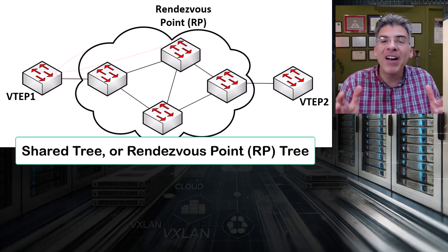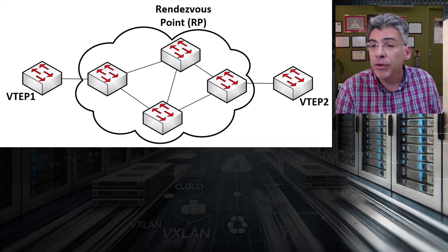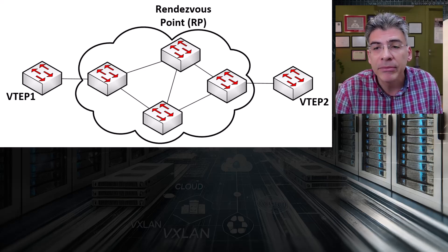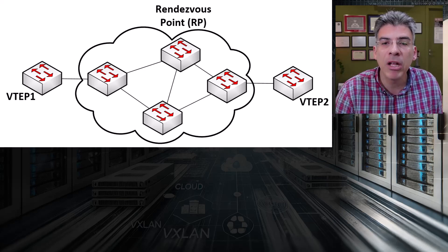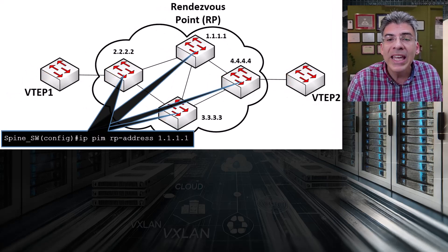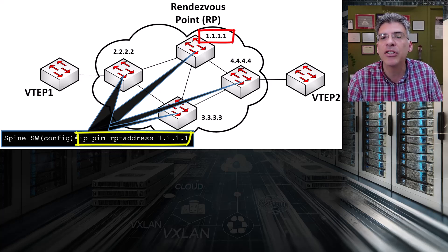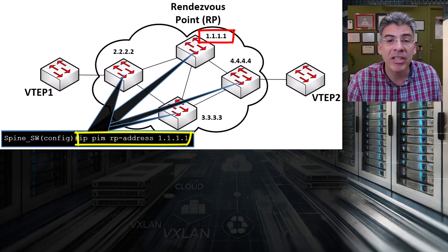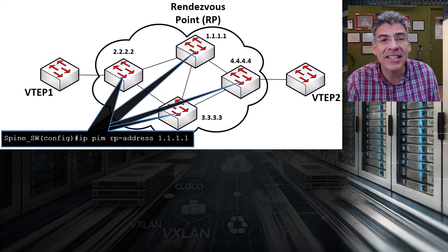An RP helps in efficiently managing multicast group memberships and multicast routing by serving as the root of what is known as a shared tree or the RP tree, to which multicast sources send their traffic and from which receivers join the multicast group. The RP is a vital part of the operation of PIM sparse mode multicast. So the first weakness in our original multicast solution is that we only have one RP — it's a single point of failure. Although we didn't show it in our multicast configuration, we had actually manually configured that RP, and we statically configured each of the other routing devices in the underlay network to point to that device as the RP. This is troublesome because that RP is indeed a single point of failure.